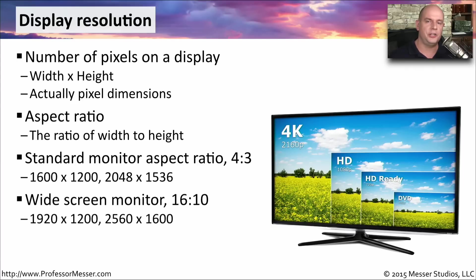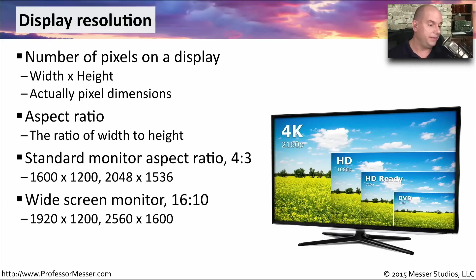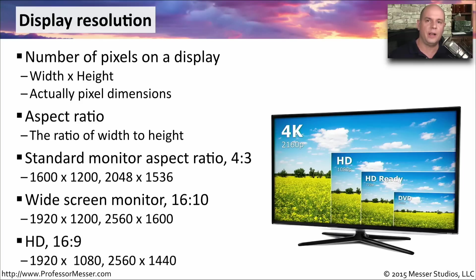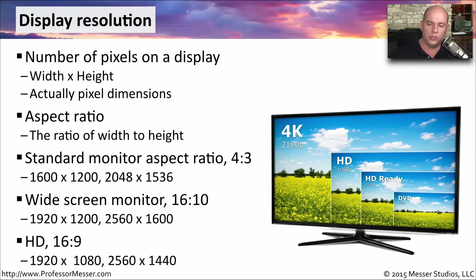Another common aspect ratio seen on displays is 16 by 10, with resolutions of 1920 by 1200 or 2560 by 1600. Perhaps one of the more common aspect ratios, especially for televisions, is 16 by 9. We sometimes refer to this as the HD resolution or the HD ratio — this is 1920 by 1080 or 2560 by 1440.